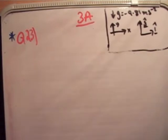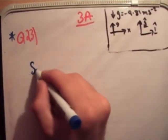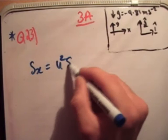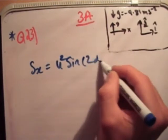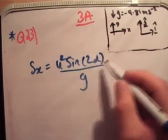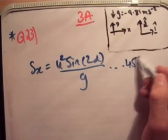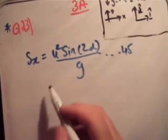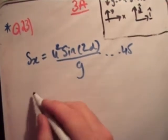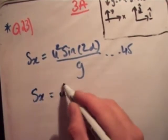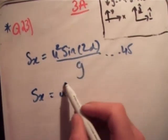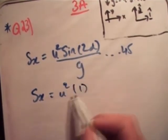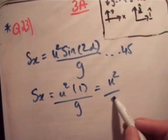So once again we go back to page 73 where we prove the greatest range. And we said the range s sub x is equal to u squared sine 2 alpha over g. We're asked to investigate where alpha is 45 degrees. So if you plug 45 degrees in you get s sub x equal to u squared times the sine of 90. If you plug that in you're going to get 1 over g, u squared over g.